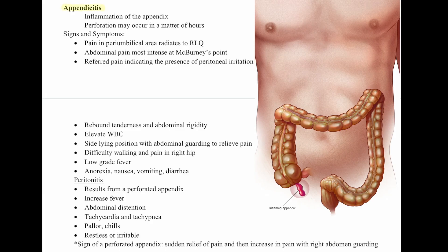Next we have appendicitis, which is inflammation of the appendix. Perforation may occur within hours. Signs and symptoms include pain in the periumbilical area that radiates to the right lower quadrant — a key sign. Abdominal pain is most intense at McBurney's point, so if you see McBurney's point in a question, think appendicitis. There is also referred pain indicating peritoneal irritation, rebound tenderness, abdominal rigidity, elevated white blood cells, side-lying position with abdominal guarding, difficulty walking, pain in the right hip, and low-grade fever.